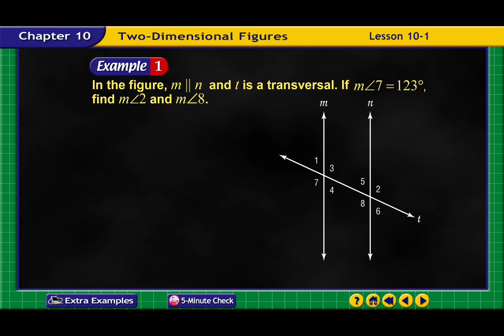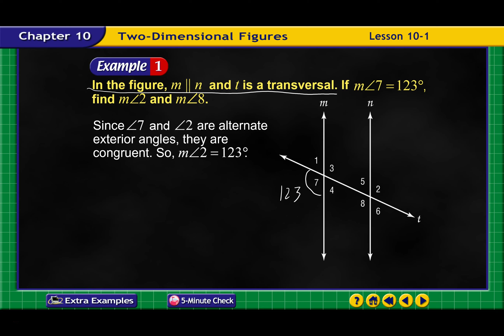In the figure, M and N are parallel and T is the transversal. If the measure of angle 7 is 120 degrees, find the measure of angle 2 and the measure of angle 8. I always like to label these things — so this angle is 123 degrees. Since angle 7 and angle 2 are alternate exterior angles, they are congruent. So, the measure of angle 2 is 123 degrees as well.